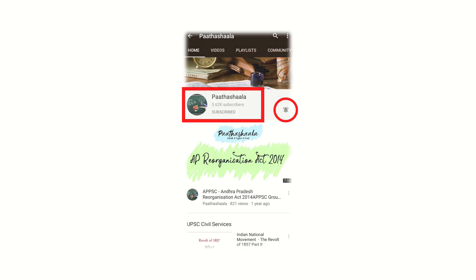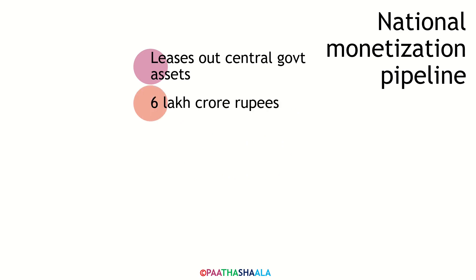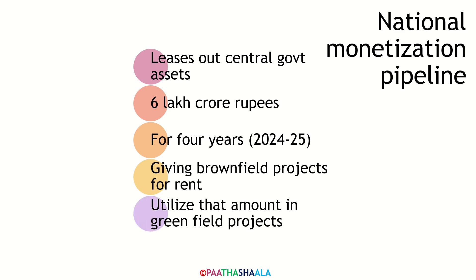The national monetization pipeline leases out central government assets with the value of around 6 lakh crore rupees over a period of 4 years ending in 2024-25. The main idea is to give out some brownfield projects for rent to the private sector and thus utilize the revenue generated to finance greenfield projects.